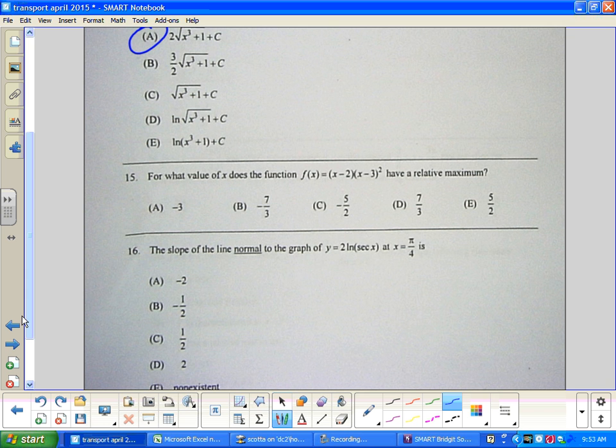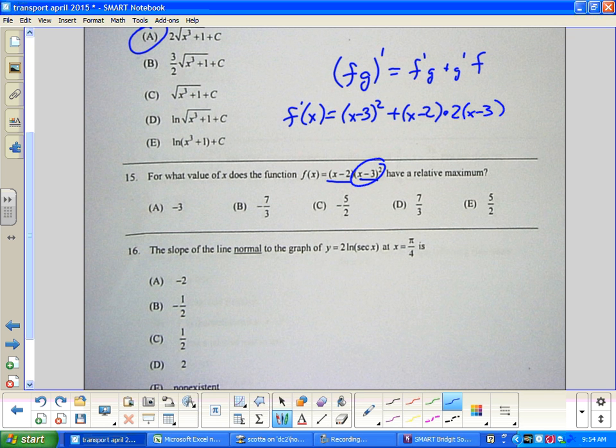I'm going to have f times g. And again, we remember that when we try to take the derivative of f and g, that's f' g plus g' f. So f'(x) equals the derivative of x-2 is simply 1. So I have (x-3)² plus (x-2) times the derivative of that, which is 2 times (x-3) times 1. Chain rule from the inside.